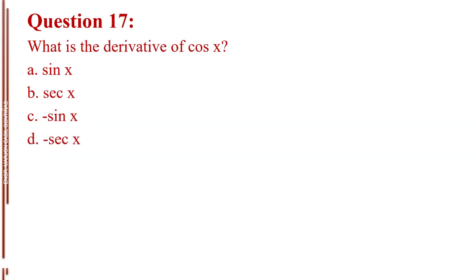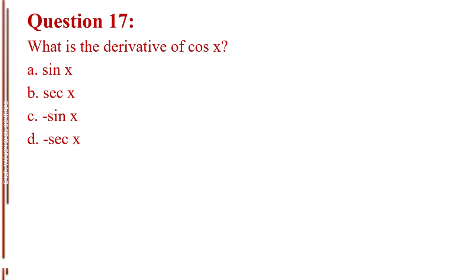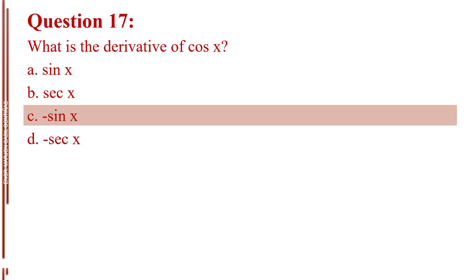Question number 17. What is the derivative of cosine x? Letter A, sine x. Letter B, secant x. Letter C, negative sine x. Letter D, negative cosecant x. The answer is Letter C, negative sine x.